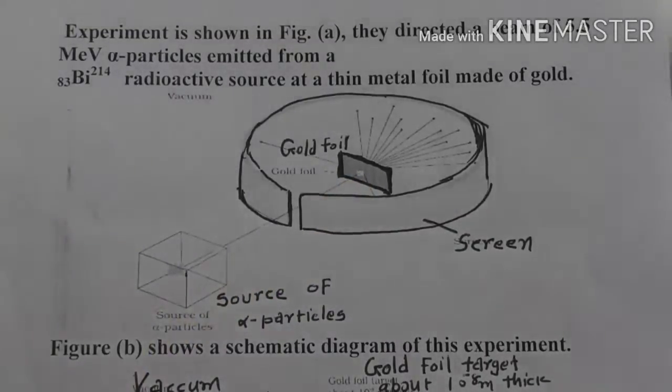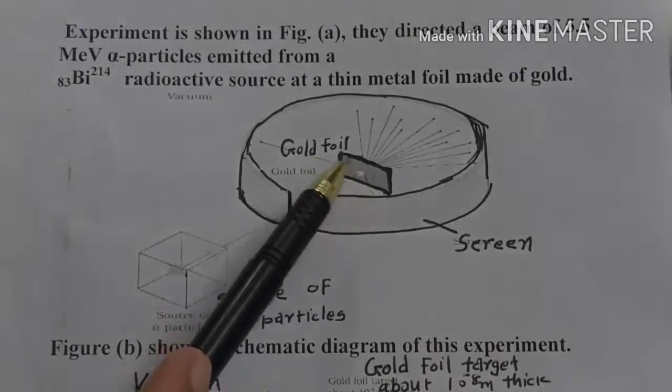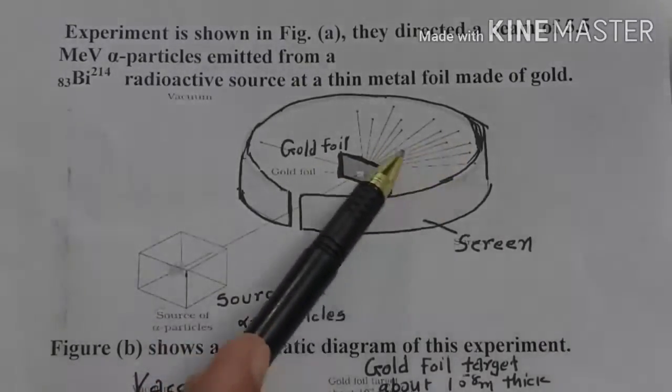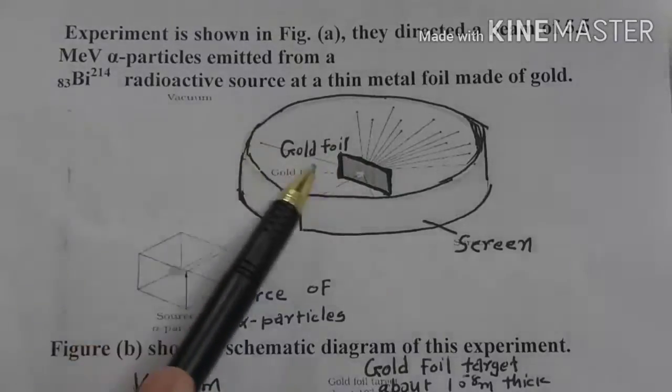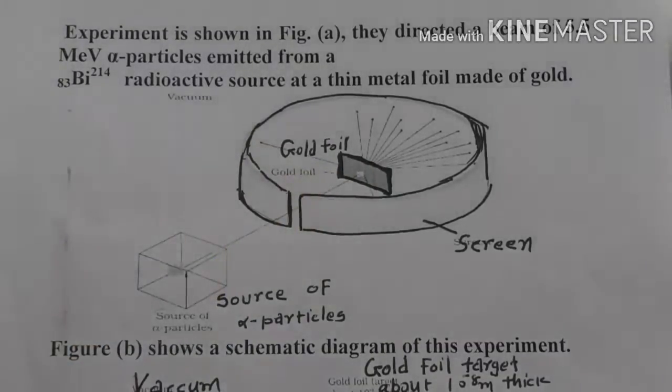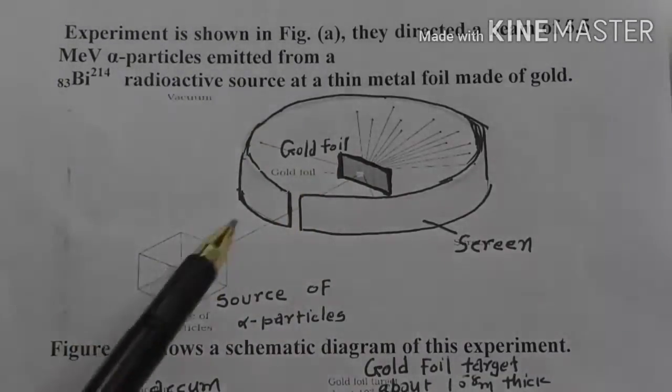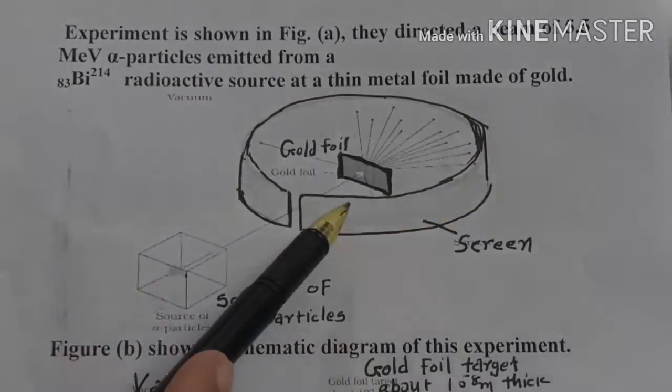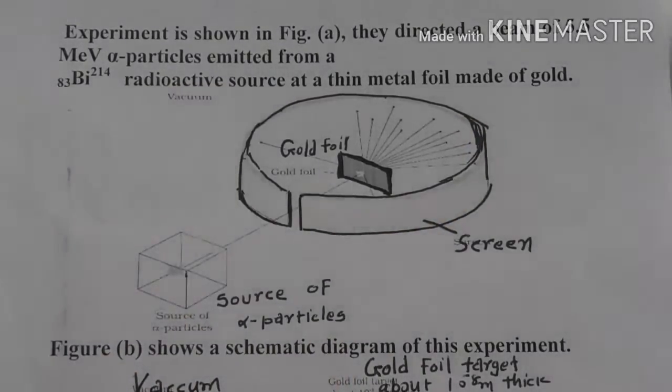After hitting this gold foil, alpha particles get scattered in different directions and they will hit the screen of zinc sulfide and there produces a scintillation, a very small light. Number of scintillations can be seen with the microscope and you can count the number of alpha particles scattered at various angles.